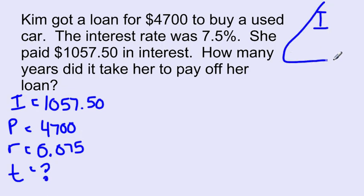If we draw our lovely triangle, I, P, R, T. And we want to solve for T this time. So if we covered that up, we would have I divided by P, R.